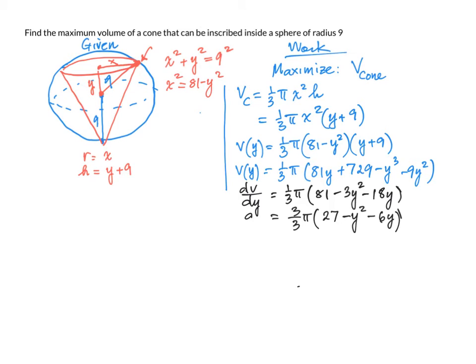Now, we set the derivative dv dy equals to 0 to find the maximum value or the critical point that would give us the maximum volume. So my equation, factor out the negative. So we can have negative pi times y squared plus 6y minus 27 equals to 0.